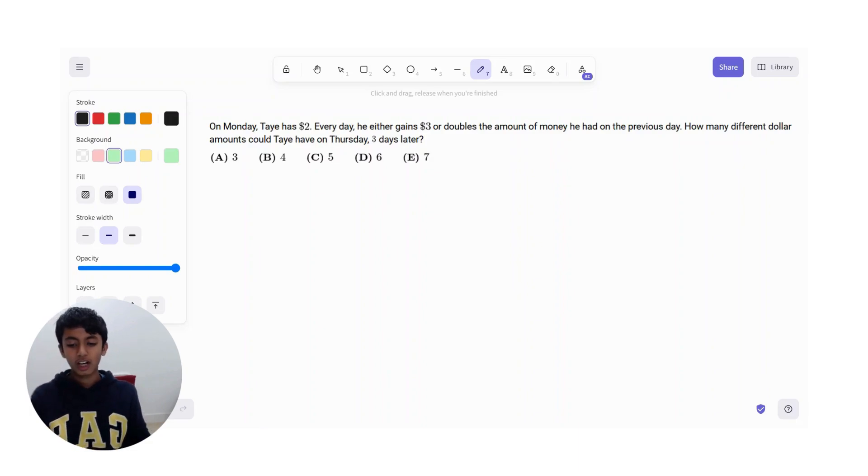Okay, so on Monday, Tay has $2. Every day, he either gains $3 or doubles the amount of money he had on the previous day. How many different dollar amounts could Tay have on Thursday, three days later?